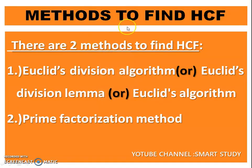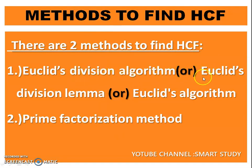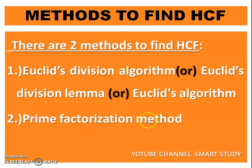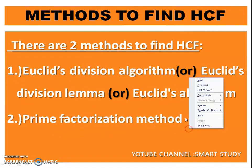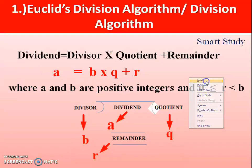There are two methods to find HCF. One is Euclid's division algorithm, also known as Euclid's division lemma or Euclid's algorithm. The second method is the prime factorization method.